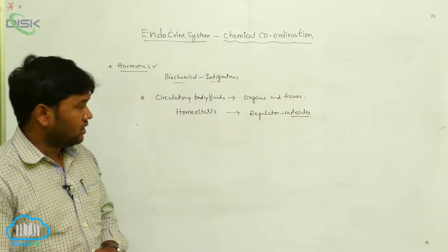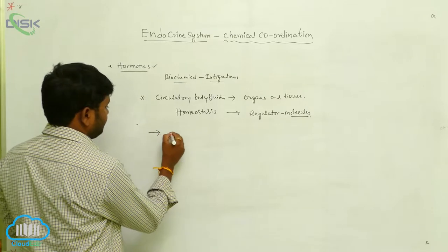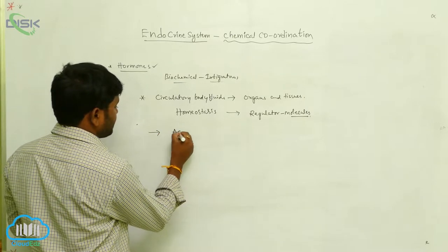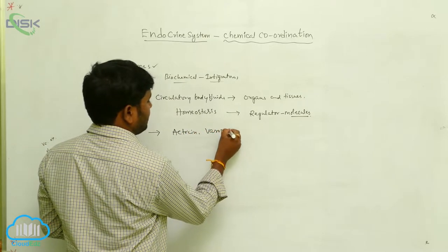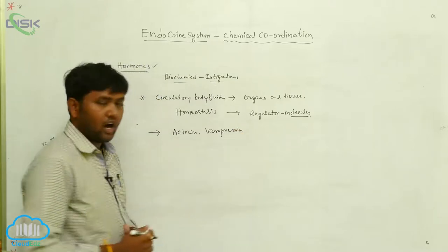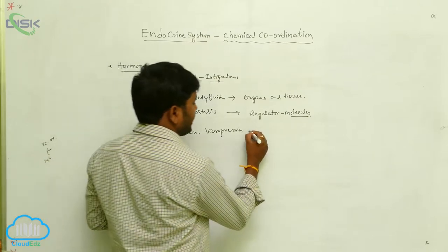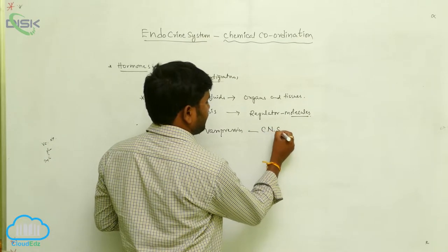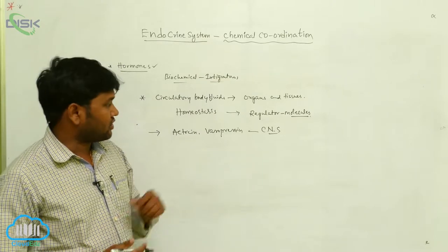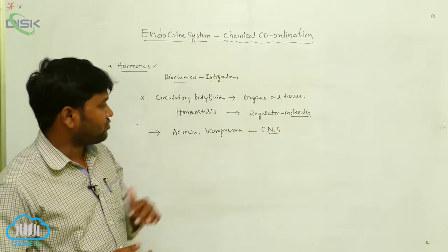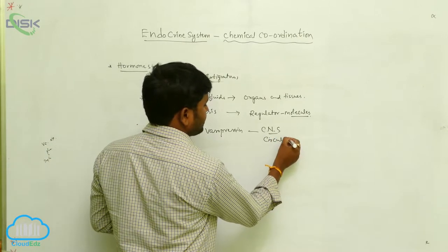Some hormones, such as oxytocin and vasopressin, are secreted from the CNS — the central nervous system — and they are transported and transmitted through the circulatory systems to different organs.